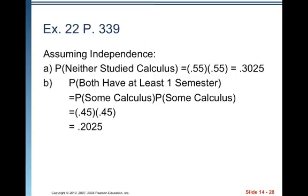All right. For part B, it says both have studied at least one semester of calculus. So that would be the probability of some calculus that we found earlier times the probability of some calculus because you've got two individuals. So that would be 0.45 times 0.45, which is 0.2025.